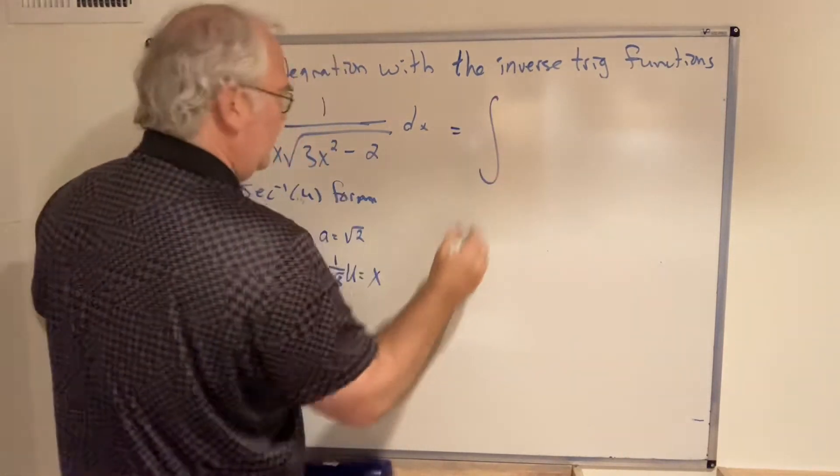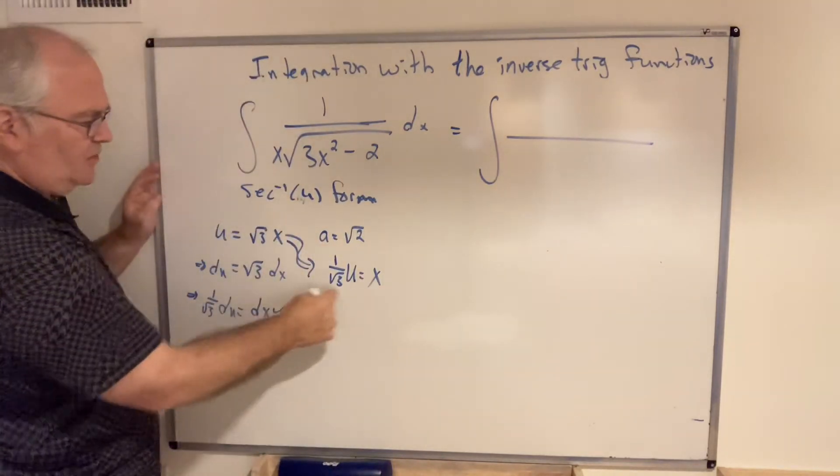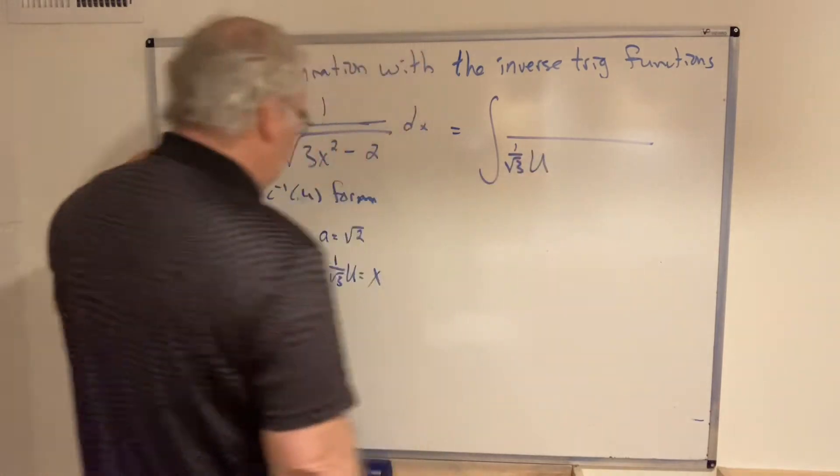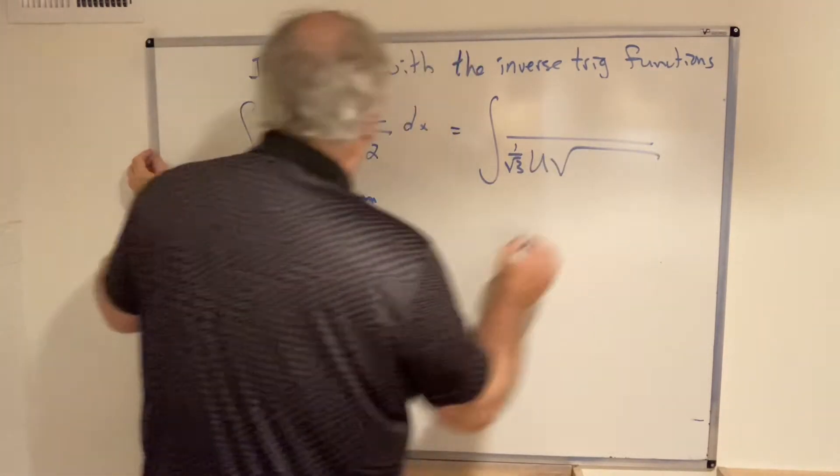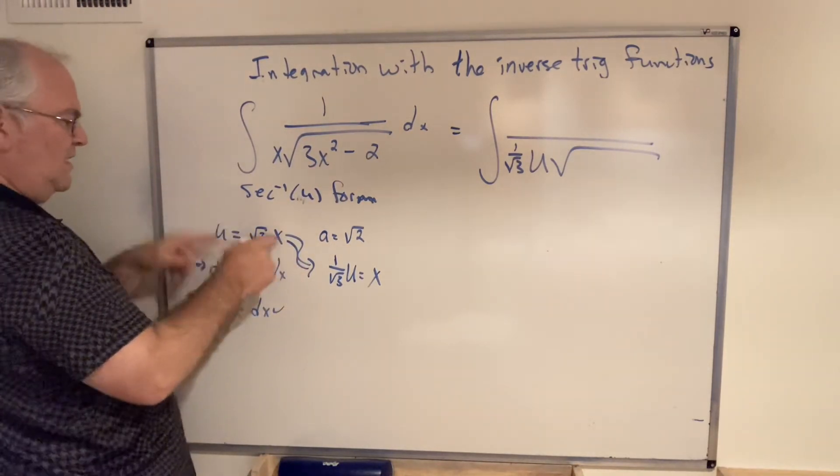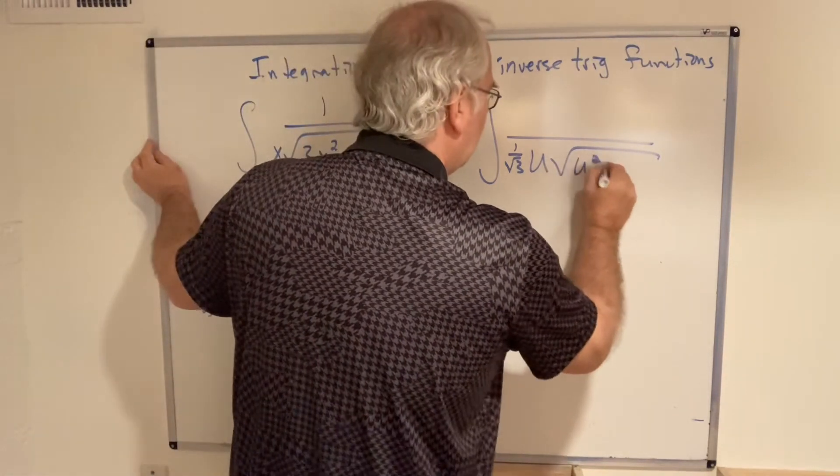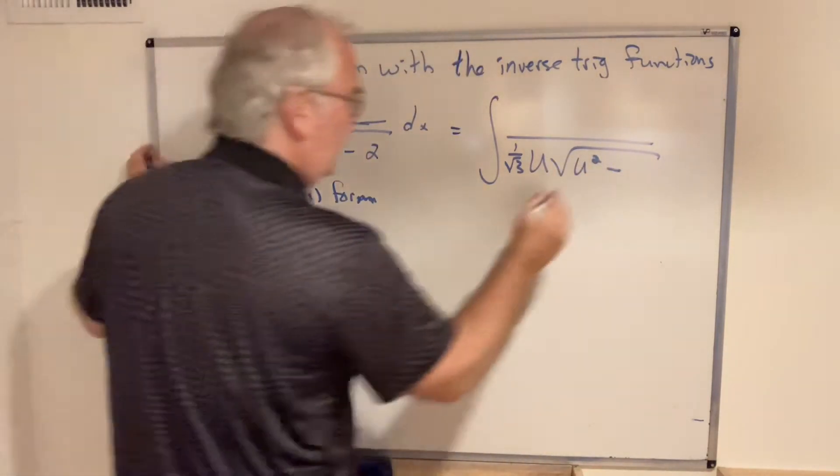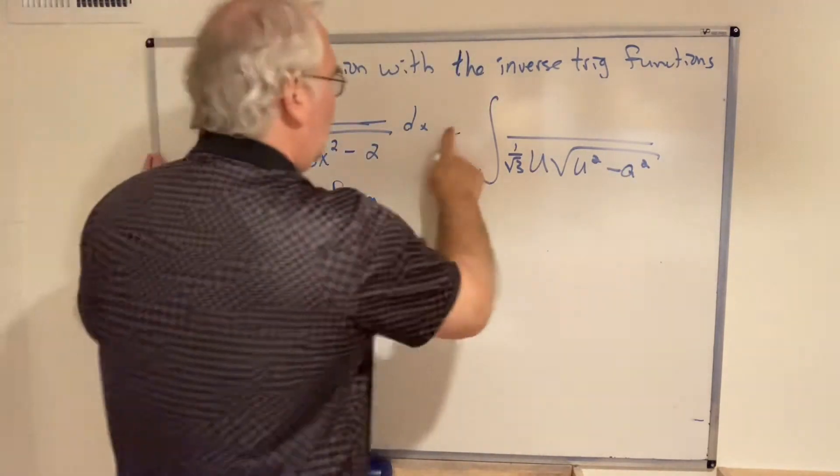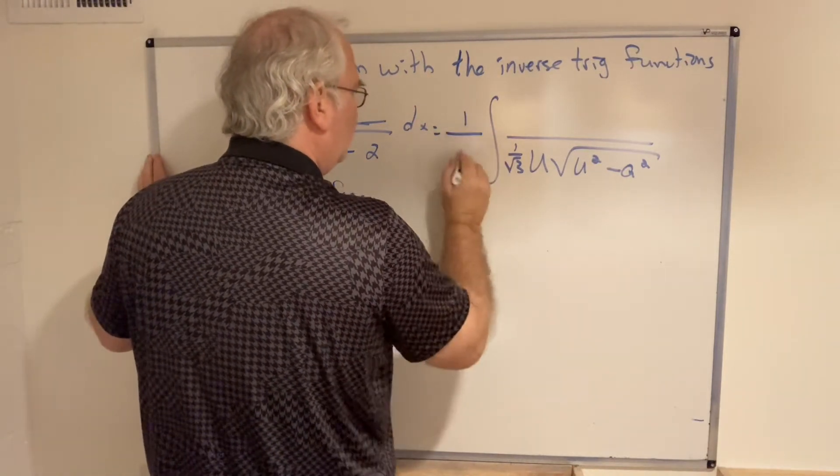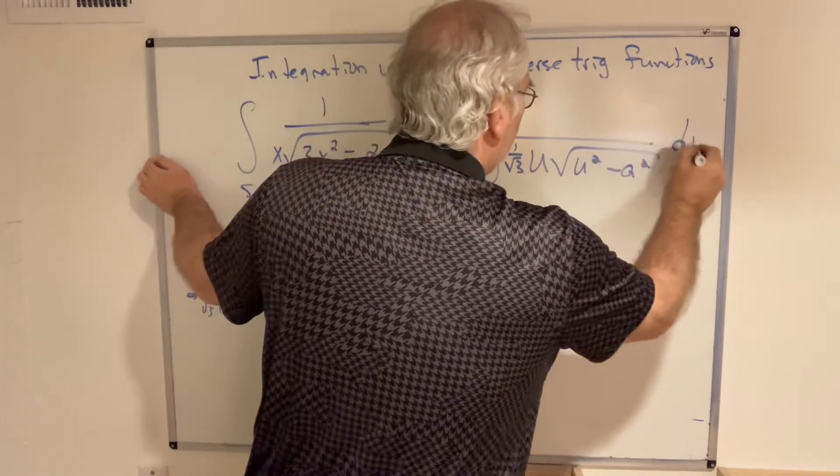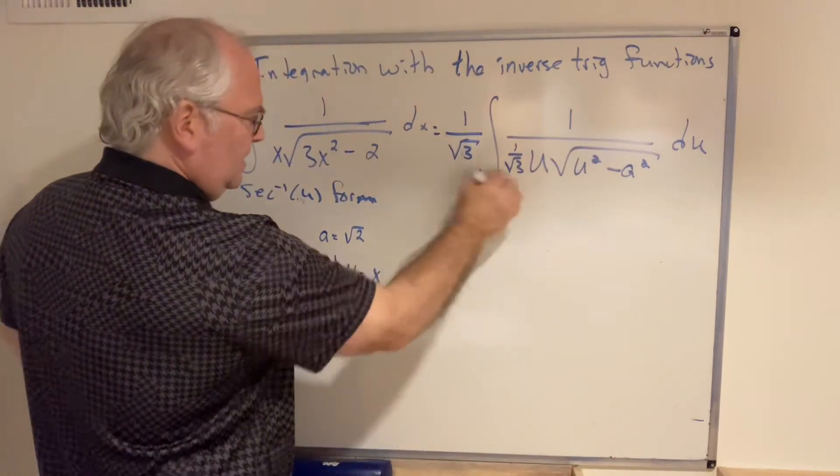So now let's see if we can fill everything in. What does x translate to? x translates into 1 over √3 times u. Square root of 3x² translates as u². This thing squared is that thing squared, minus—this is a² minus, this is a². And then dx is all we have. dx is 1 over √3 du.